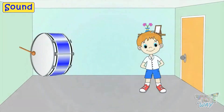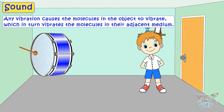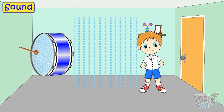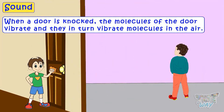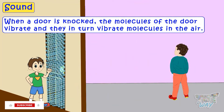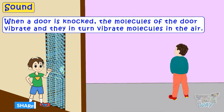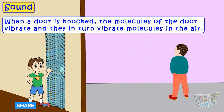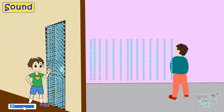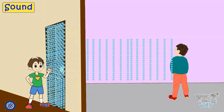Now let's see how a sound wave propagates or moves. Any vibration causes the molecules in the object to vibrate, which in turn vibrates the molecules in their adjacent medium. Like when a door is knocked, molecules of the door vibrate and they in turn vibrate molecules in the air. This vibration passes on to the next and next molecules, and this way sound travels from the door to the listener.